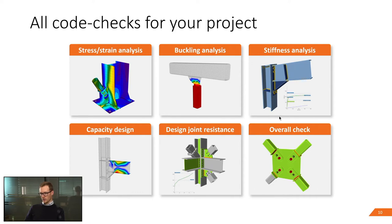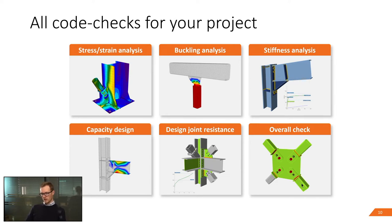Overall check is a color-coded utilization scheme. If a part is gray it's utilized between 0 and 65 percent. If it's green, it's between 65 and 95 percent. If it's orange, like this weld here, it's between 95 and 100 percent. And if parts are red, they are failing — utilized above 100 percent.